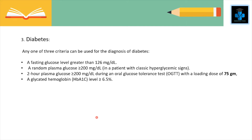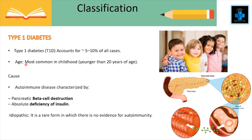The third definition is diabetes itself. Any one of three criteria can be used for diagnosis: first, fasting glucose level greater than 126 mg per dL; second, a random plasma glucose greater than or equal to 200 mg per dL in a patient with classic hyperglycemic signs; third, a 2-hour plasma glucose greater than or equal to 200 mg per dL during an OGTT with a loading dose of 75 grams; and a glycated hemoglobin HbA1c level greater than or equal to 6.5%.